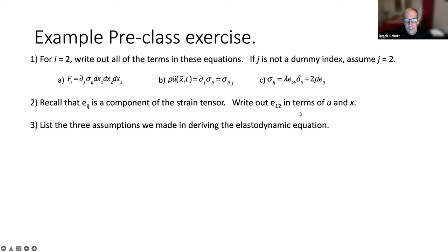I also asked them to write out E sub 1,2 of the strain tensor in terms of U, the deformation vector, and X, the location vector. And then list the three assumptions we made in deriving the elastodynamic equation.